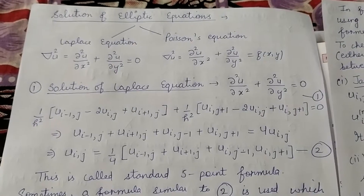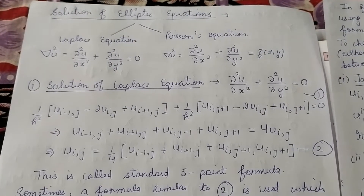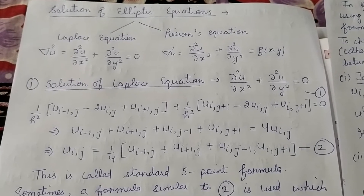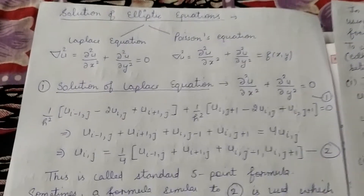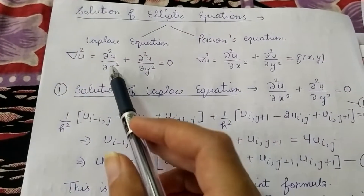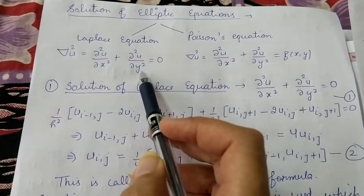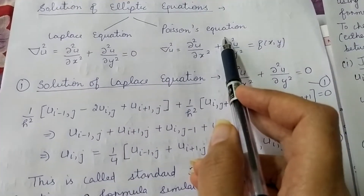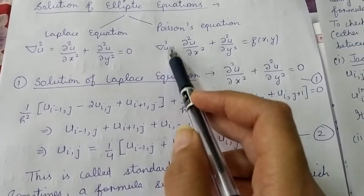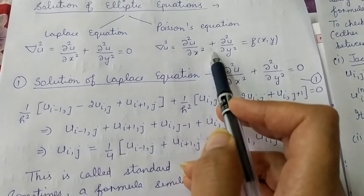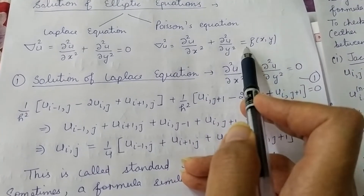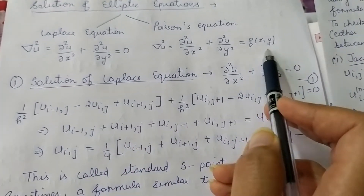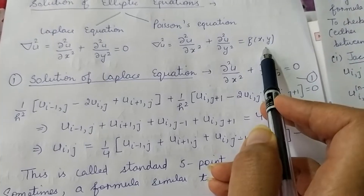In elliptic equations, you will find the solution for two types of equations: the Laplace equation and the Poisson equation. In the Laplace equation, the equation is ∂²u/∂x² + ∂²u/∂y² = 0. In the Poisson equation, the equation is ∂²u/∂x² + ∂²u/∂y² = f(x, y). The right-hand side is 0 for Laplace and contains a function f(x,y) for Poisson.